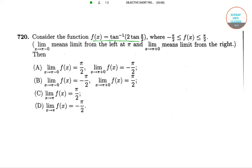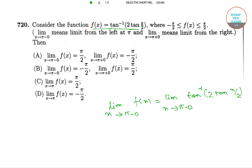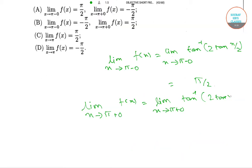We have to show which of the following options is correct. The limit as x tends to pi minus 0 of f(x) equals tan inverse of 2 tan(x/2), which equals pi by 2. And the limit as x tends to pi plus 0 of f(x) equals tan inverse of 2 tan(x/2), which equals minus pi by 2.